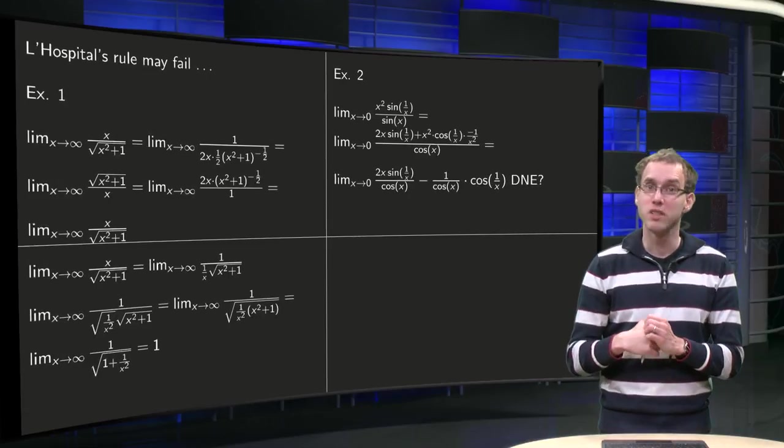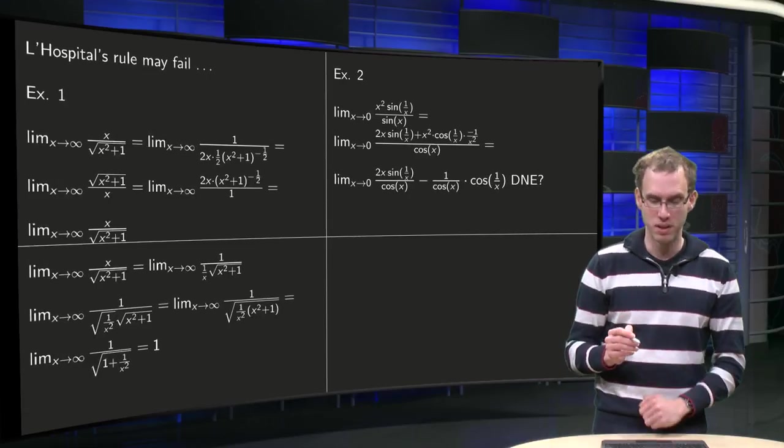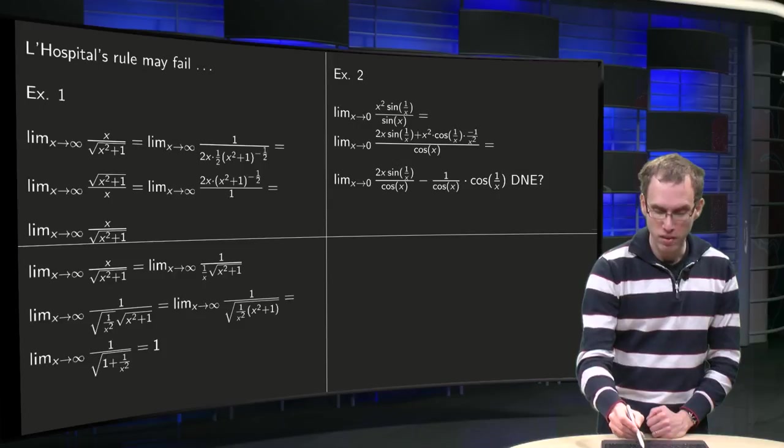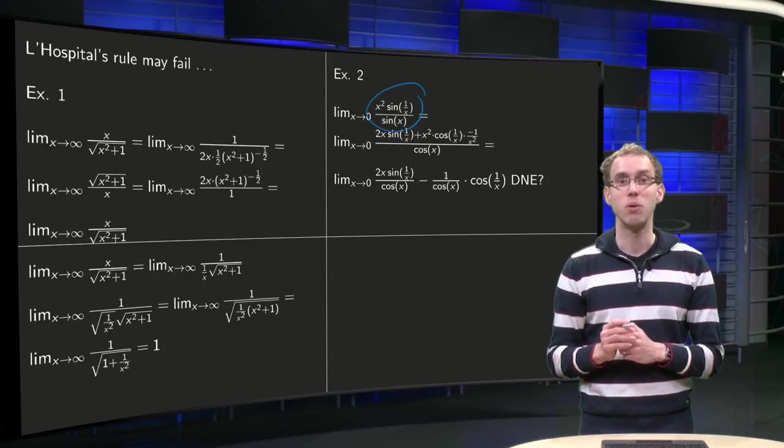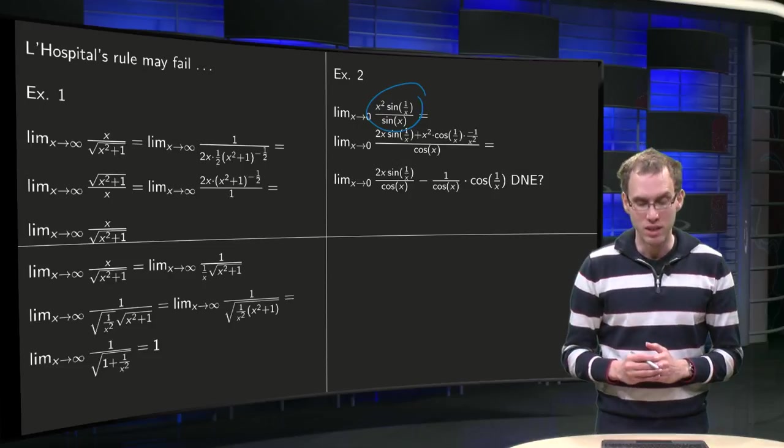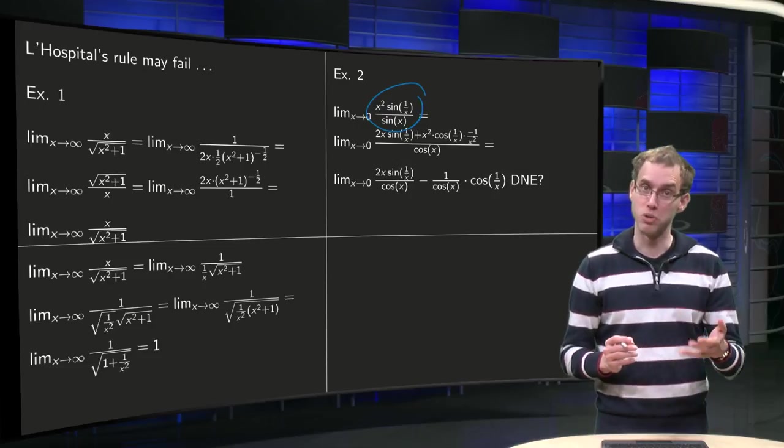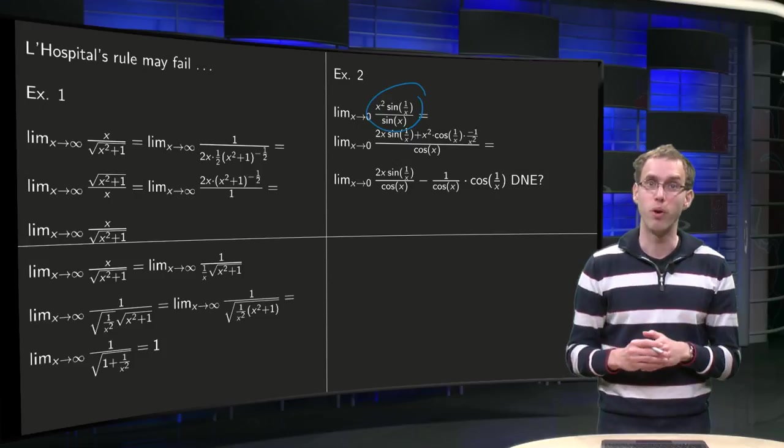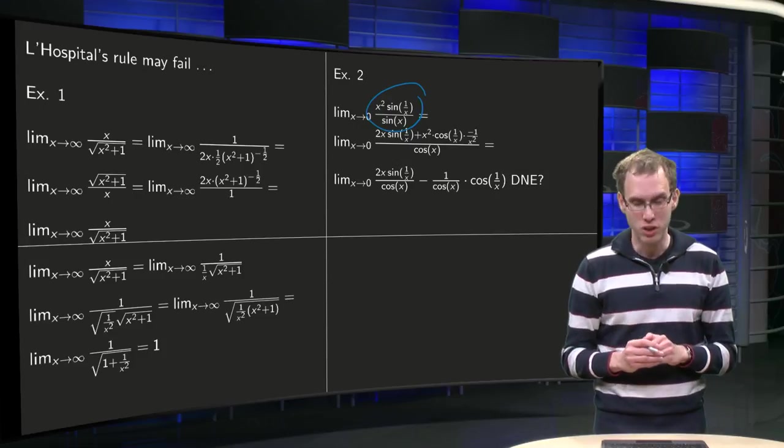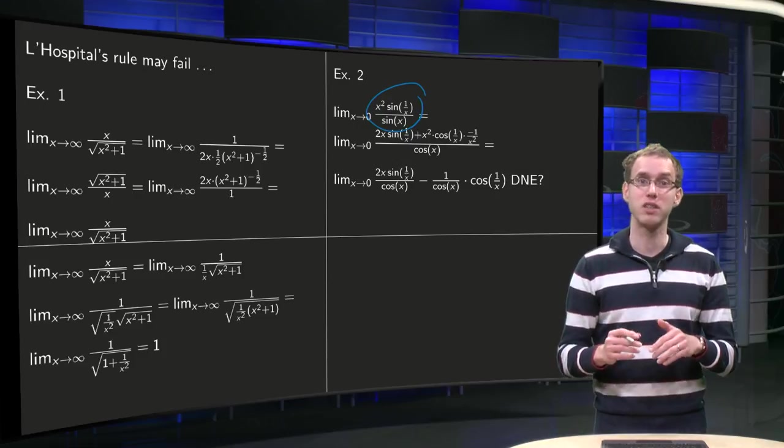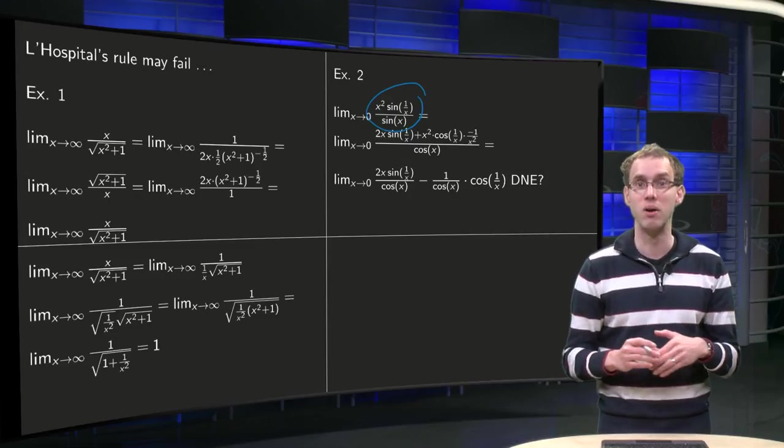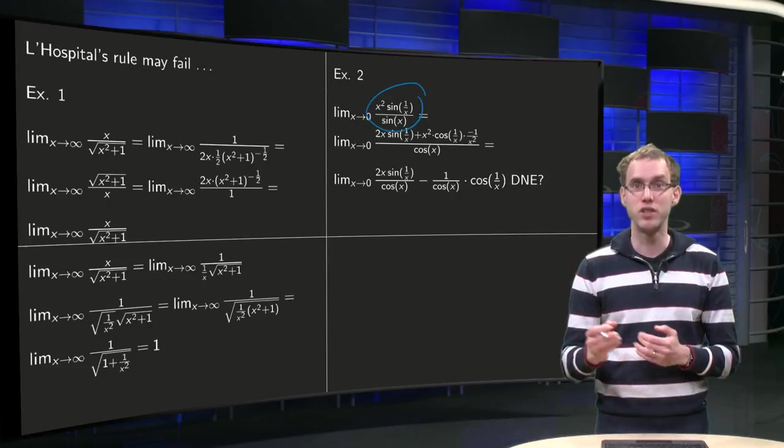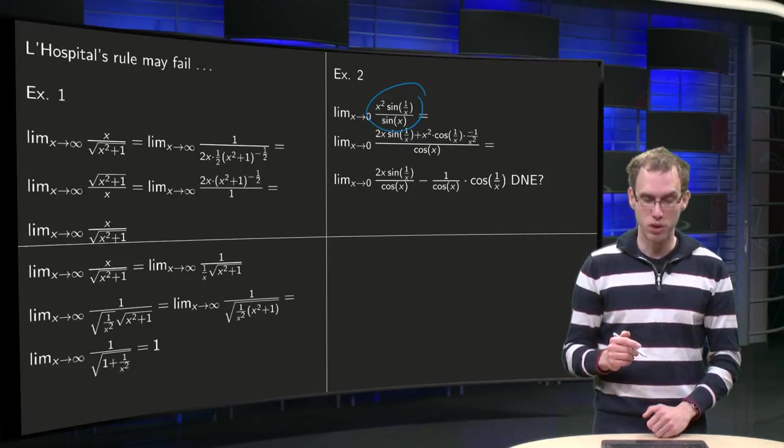The second example is a bit trickier even. We have x squared times sin 1 over x divided by sin x. So what can we do? Well, this denominator sin x, if x goes to 0, goes to 0. The numerator x squared times sin 1 over x can be squeezed between minus x squared and x squared, for x to 0 goes to 0. So we have 0 over 0, so we can try to use L'Hôpital's rule.